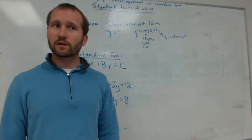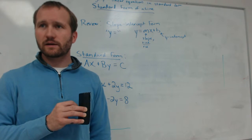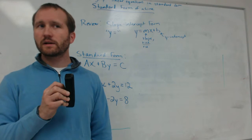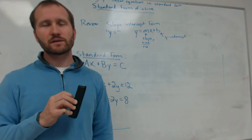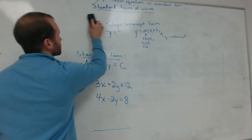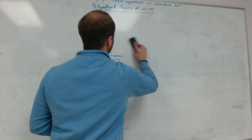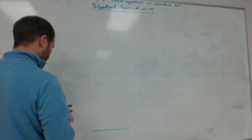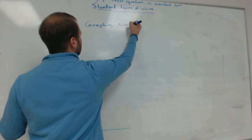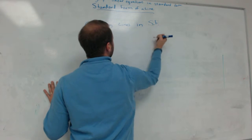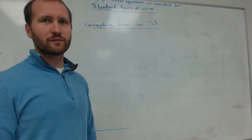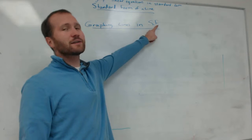So we now have standard form. I'm going to show you how to graph these. And it's not hard, especially the ones that I'm going to give you at first. They're going to work out really nicely. But it's not quite as tricky. Or there's not a trick like we had for slope-intercept form. There's more. You just have to make a T-chart with these. Graphing lines in standard form.